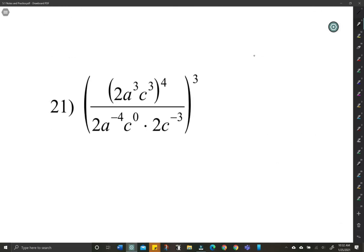Take them slow. First, let's start by distributing the 4. So this is going to be 2 to the 4th. Oh, man. a to the 12th. c to the 12th.